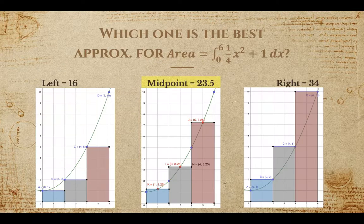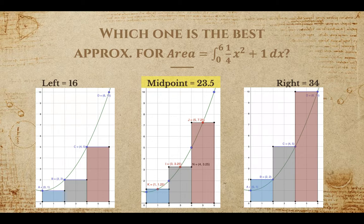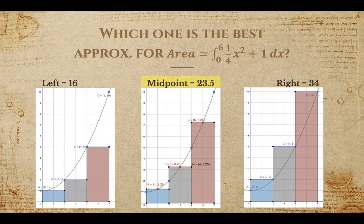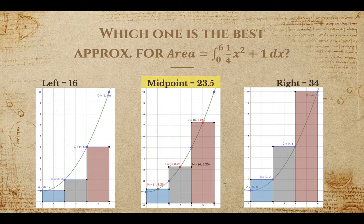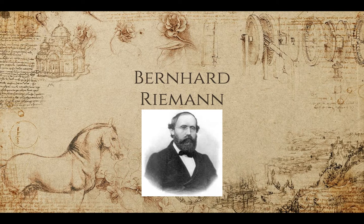As we can see, midpoint is the best approximation for the area of y equals 1/4 x squared plus 1. This is generally true for all area approximations. Midpoint will be a better approximation since it's a balance between the overestimation and the underestimation that can happen with left and right approximations. However, if your number of rectangles is small enough, you might not see much of a difference in the three methods. This concludes my presentation on Bernard Riemann and his contributions to mathematics.